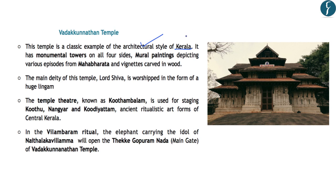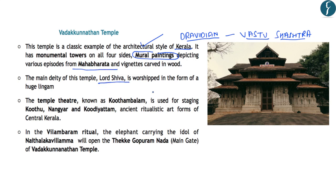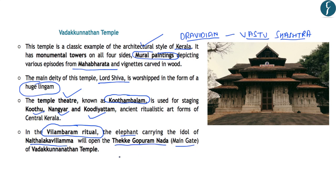The Vadakkunathan Temple is an example of Kerala's architectural style, which is different from the Dravidian style prevalent in South India — being influenced by both Dravidian and Vedic Vastu Shastra. The temple is famous for its mural paintings depicting episodes from the Mahabharata, though the main deity is Lord Shiva worshipped in the form of a huge lingam. The temple theater is known as Kuthambalam and features art forms like Koothu, Nangyaar Koothu, and Kudiyattam. An important ritual is the Vilambaram, in which elephants carry the idol and open the main gopuram.